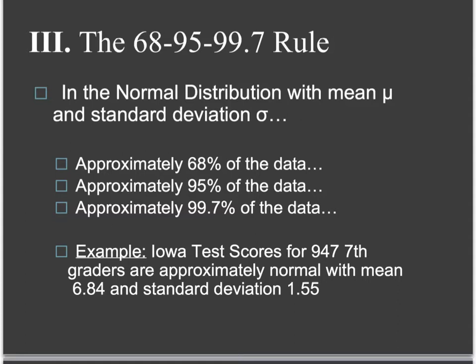With normal curves, we have what's called the 68-95-99.7 rule. It's also called the empirical rule in other texts — so if you see that elsewhere, it's the same thing.